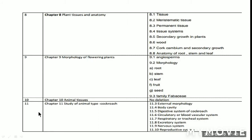Chapter 11, study of animal type. In this chapter, the Cockroach is studied. Cockroach's external morphology, body cavity, digestive system, circulatory or blood vascular system, respiratory or tracheal system, excretory system, nervous system, and reproductive system — these points are reduced.